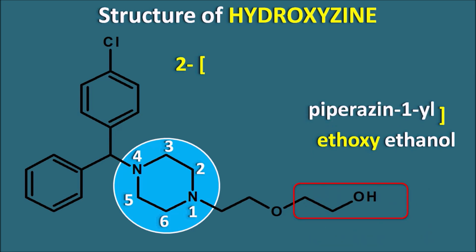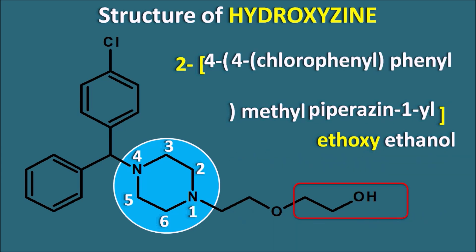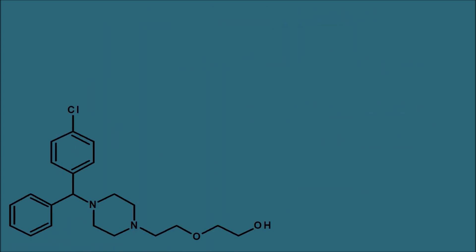This ethoxyethanol group is attached to the piperazine ring system at the first position, making it piperazin-1-yl. Expanding further, the piperazine has a methyl group at the fourth position, so we write 4-methyl, and this methyl group is attached to a phenyl group as well as a 4-chlorophenyl group. In this way we can write the IUPAC name of hydroxyzine.